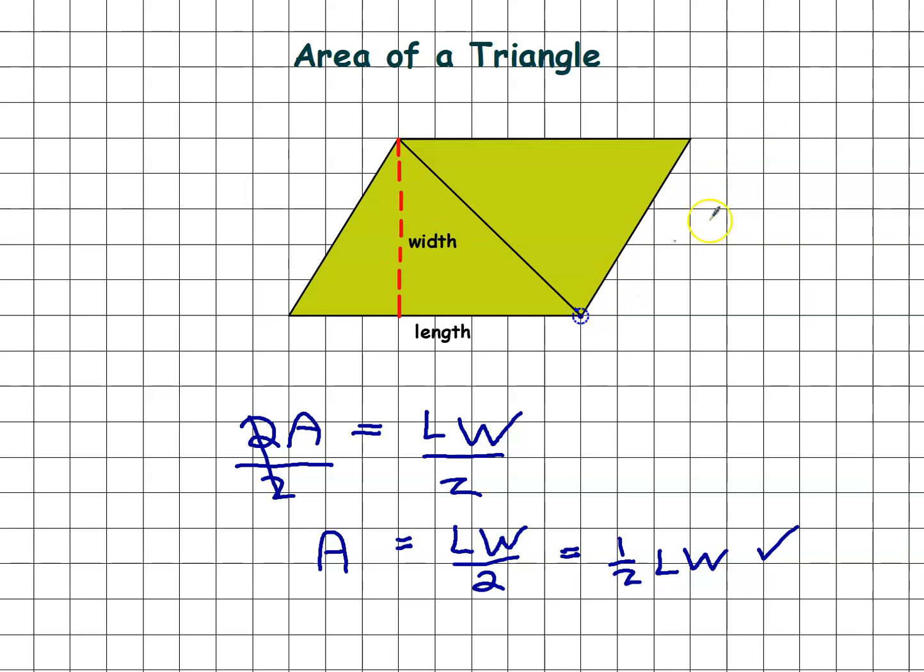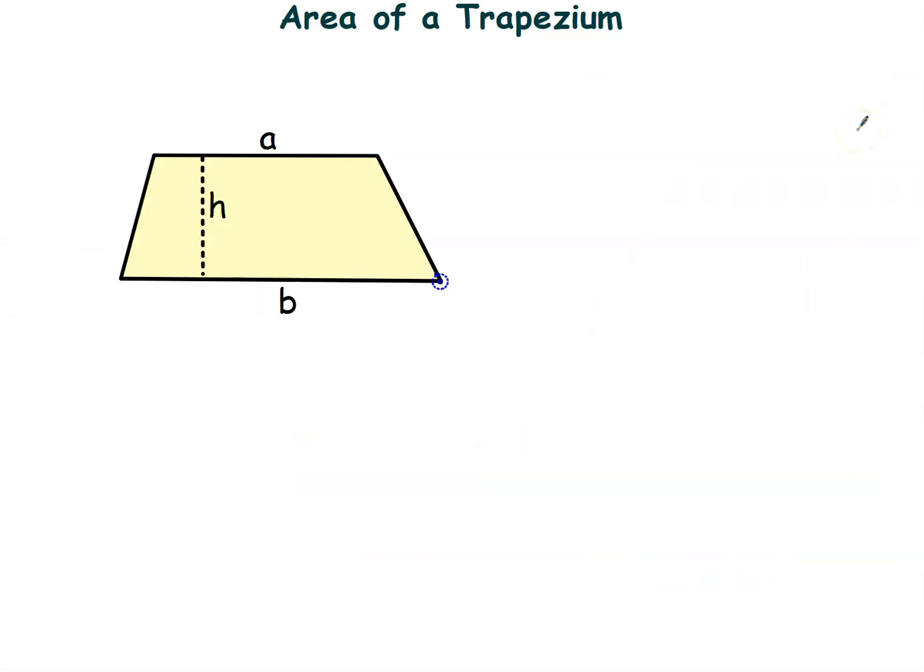Okay, slightly more complicated than that is the area of a trapezium. So if you remember, a trapezium basically has two sides that are parallel, two sides that are not parallel. And then h is the distance between the parallel sides. So how can we get the formula for this? Well, I've got two different ways of doing it.